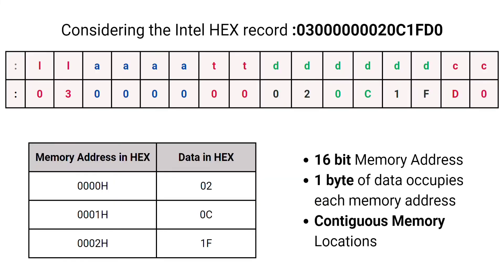Let us consider the example of the first hex record displayed in the snippet. The record is: colon 03 0000 00 02 0C 1F D0. Classifying this into the various fields using the table: it starts with a colon, then the first two digits 03 represent the record length, indicating that the total number of data bytes should be three. The next four digits — four zeros — indicate the starting address. The next field, 00, indicates this is a data record.